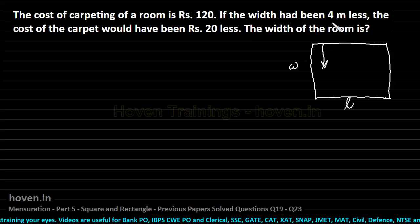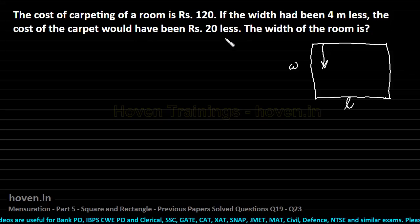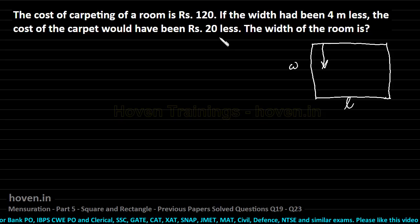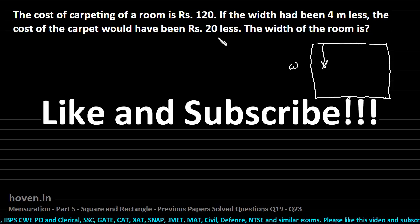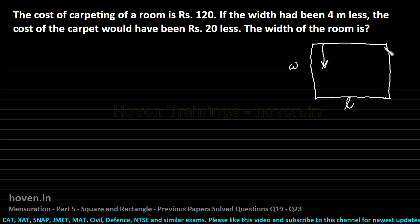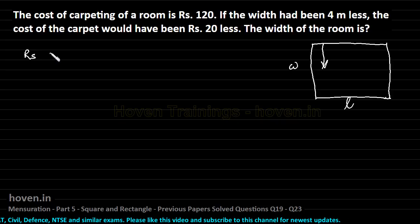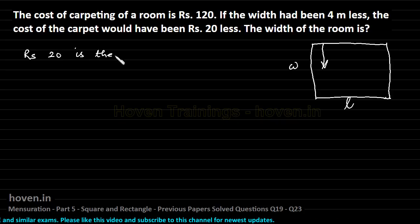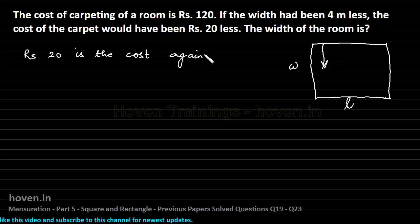If the width had been 4 meters less, the cost would have been Rs 20 less. This means Rs 20 is the cost for covering a width of 4 meters, with length and everything else remaining the same. So we can write: Rs 20 is the cost against 4 meters.